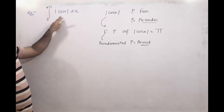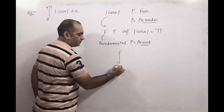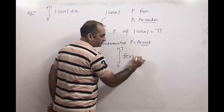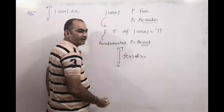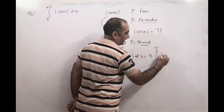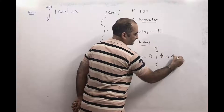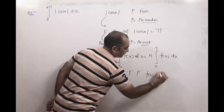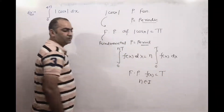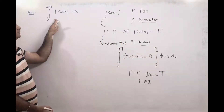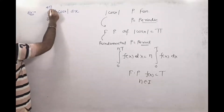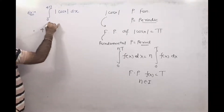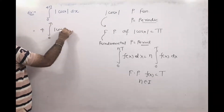So here we know the integral from 0 to 4π of modulus of cos x dx. We know the property: integration from 0 to n·T of f(x) dx equals n times integration from 0 to T of f(x) dx, where the fundamental period of f(x) is T and n belongs to integers. Applying this property, since the fundamental period is π and 4 is an integer, we get 4 times the integral from 0 to π of modulus of cos x dx.